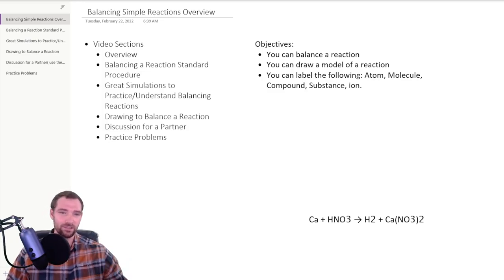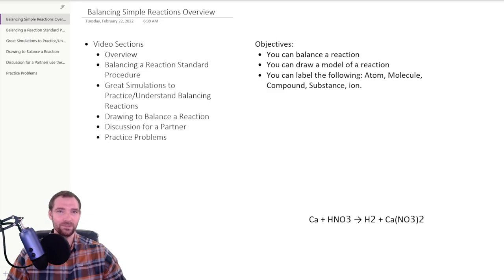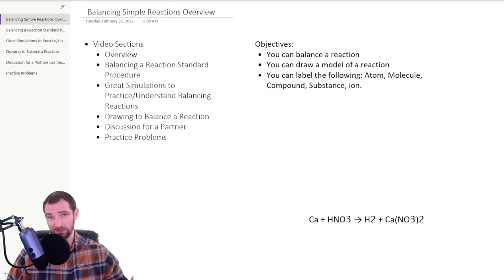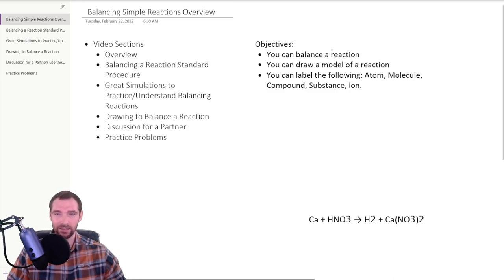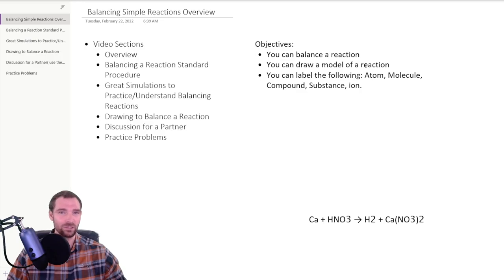There's also a discussion that you can do with a partner. I'd highly recommend talking through that discussion as if this was a class assignment. It really helps when you're practicing these types of things and labeling stuff to confirm that your labels are correct — to make sure you actually have an understanding of things like atoms, molecules, compounds, substances, and ions. You should be able to draw out at least the general idea of these.